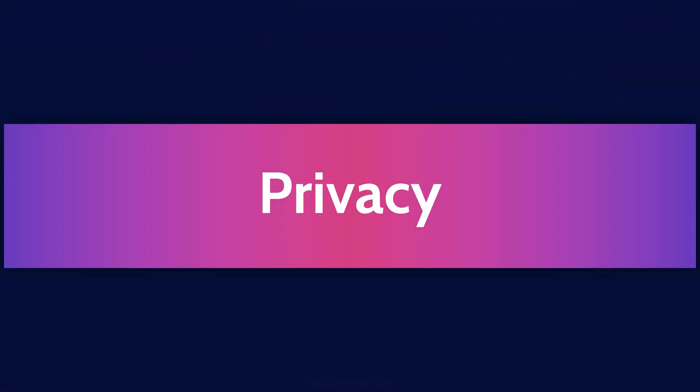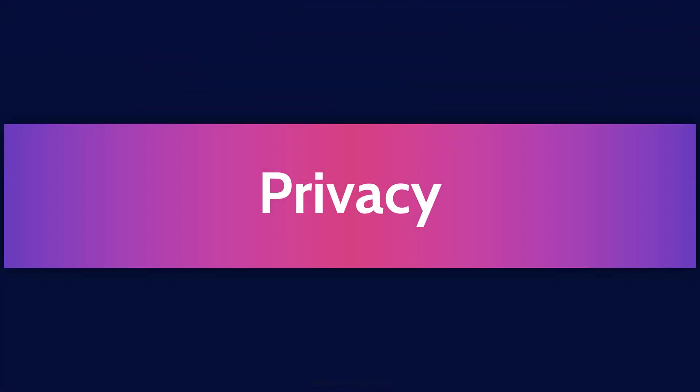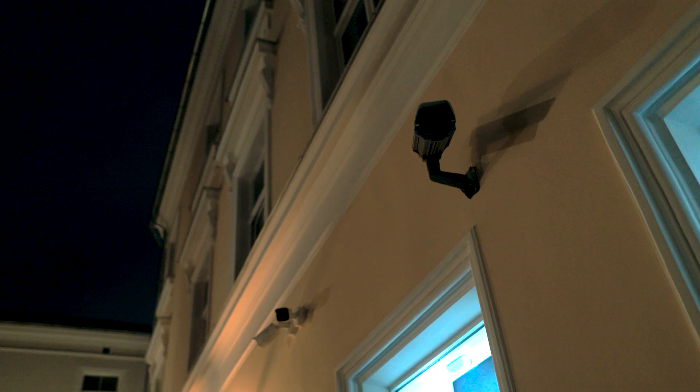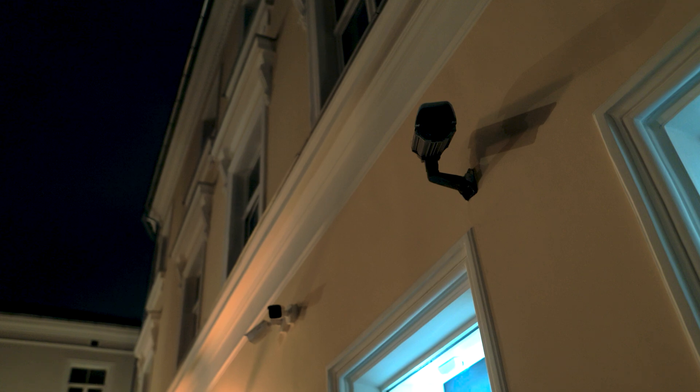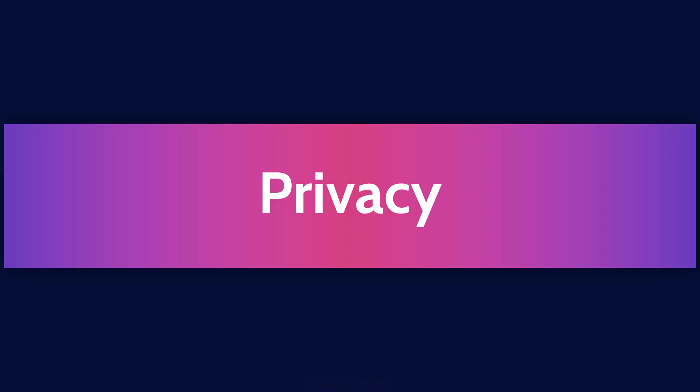So let's begin with a definition of privacy. It's the state or condition of being free from being observed or disturbed by other people. That's a really good definition of privacy that you should remember for the exam. But what does it mean being free from being observed and disturbed? Essentially, privacy is the idea that an individual can withhold parts of their personal information from wider society to control what personal information others know about them.